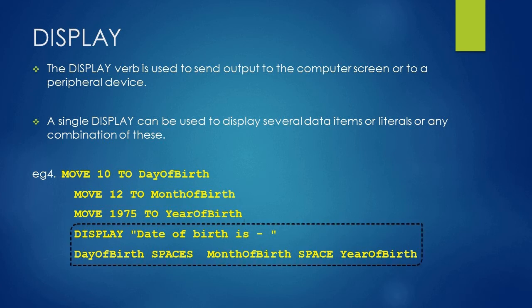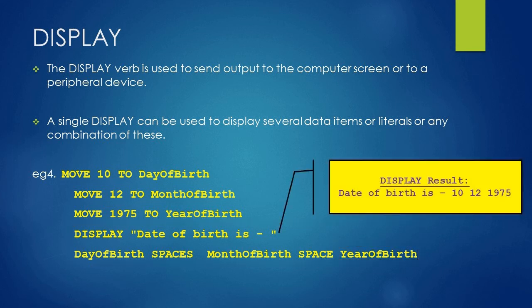Then we are using a DISPLAY statement with a literal having value 'date of birth is' and after that literal, we have used day of birth followed by SPACES, which is a figurative constant, followed by month of birth, followed by a figurative constant SPACE and year of birth. Please note that SPACES and SPACE will behave the same and give a space of one character. So the output of this DISPLAY statement is 'date of birth is - 10 space 12 space 1975'.